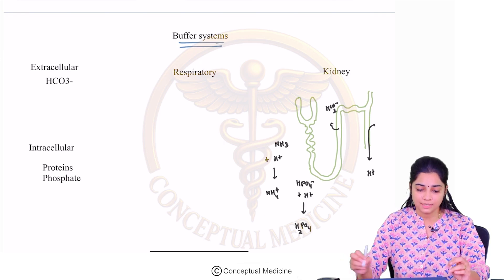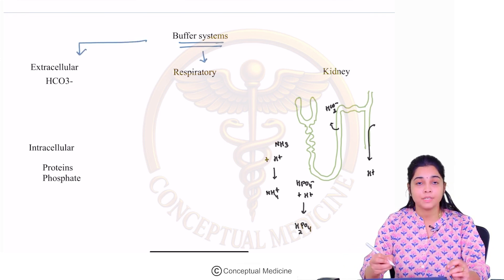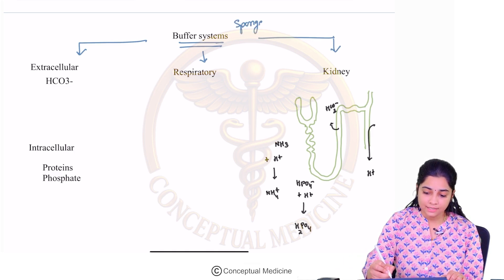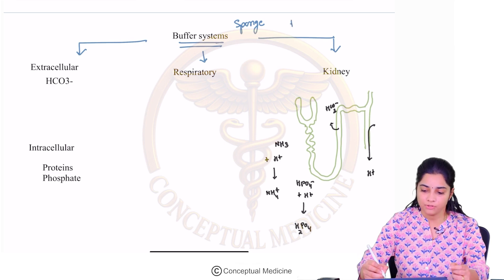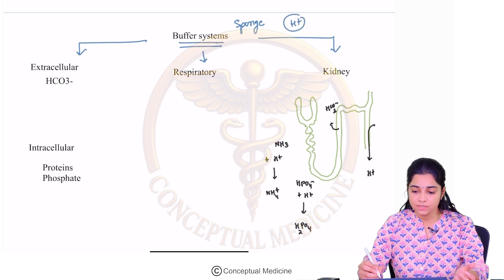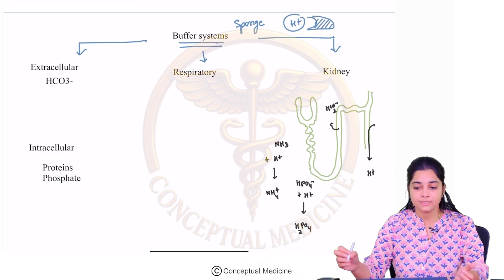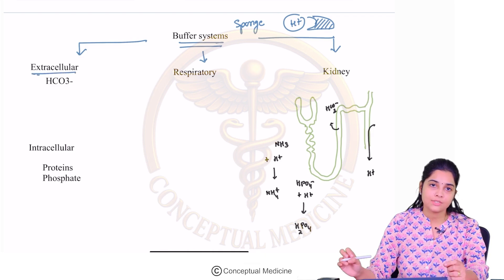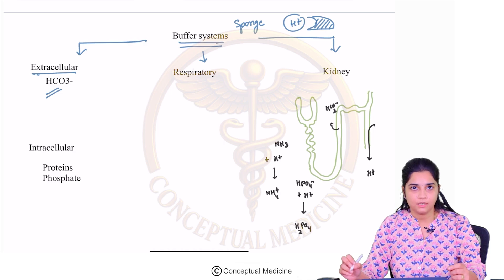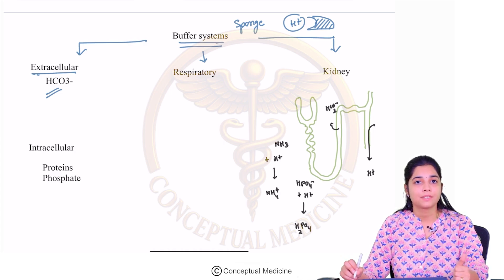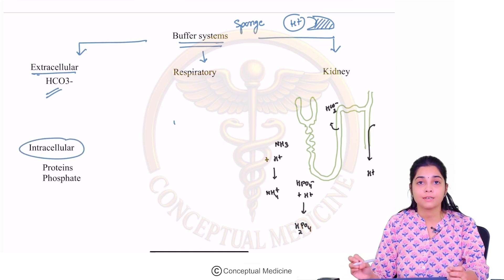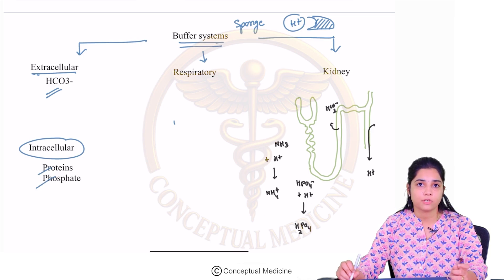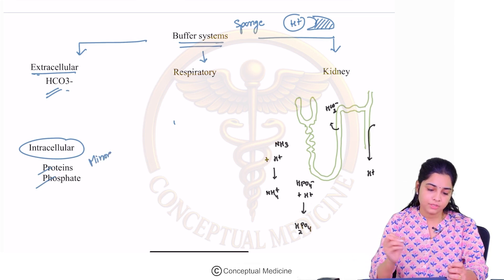The buffer systems are classified into three types: the extracellular buffer systems, the respiratory buffer systems, and the kidneys. The main aim of these buffer systems is that they act like a sponge — whenever there is an excess amount of H+ or acidosis, these buffer systems combine with it and neutralize it so that the body maintains the pH between 7.35 and 7.45. The most important extracellular buffer system is the bicarbonate ions. You also have intracellular buffer systems which include proteins and phosphate — these are minor buffers. The most important is your bicarbonate buffer.